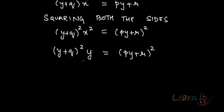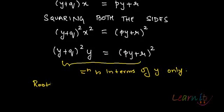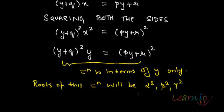This gives us (y + q)² · y = (py + r)². You see that there is no x term anymore — this equation is entirely in terms of y only, and this will be the equation whose roots will be the squares of the previous roots: alpha squared, beta squared, gamma squared. That's how we generally look into the transformation of any equation.